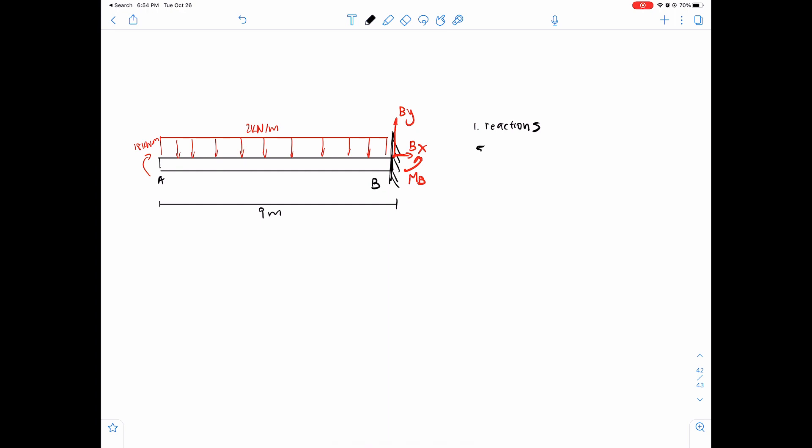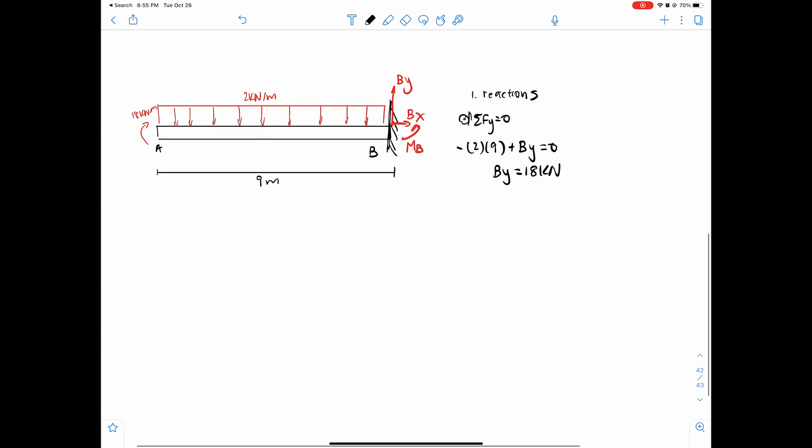And then to find the reactions, let's find sum of forces first. Sum of forces in the Y direction, setting upwards equals positive equals 0. So we have 2 times 9 from the distributed load, and then this is negative because it's going down, plus By equals 0. So By equals 18 kilonewtons. Alright, simple as that.